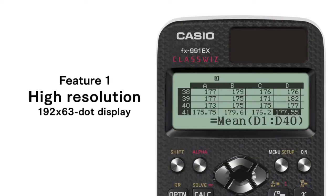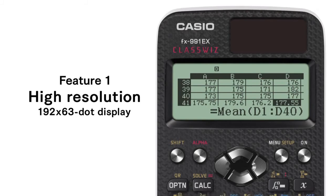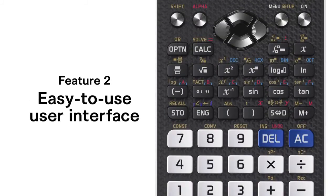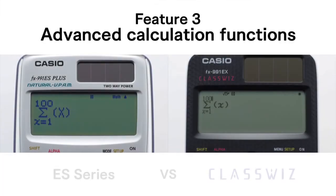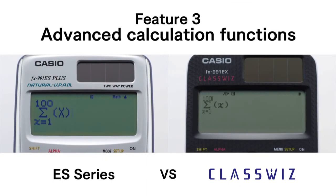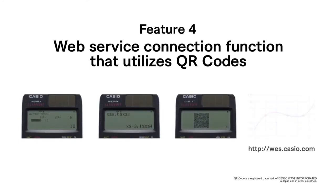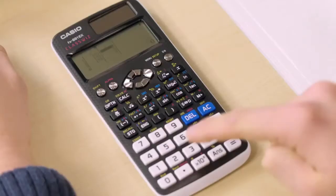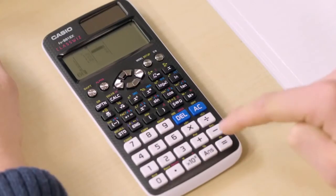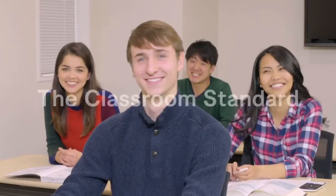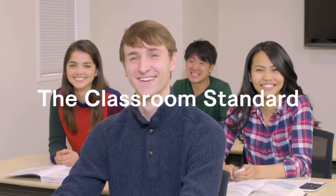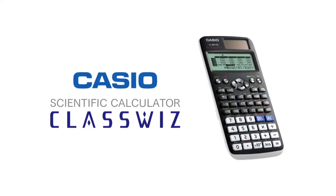A high-resolution LCD. A user interface that's easy to use in education. Speedy operation and superior computational power effective in education. A web service connection function that utilizes QR codes. ClassWiz technology has the power to change education — the classroom standard. The Casio ClassWiz Scientific Calculator.